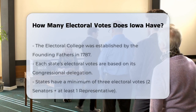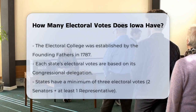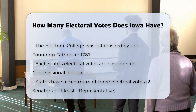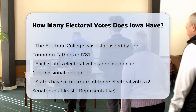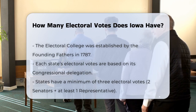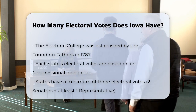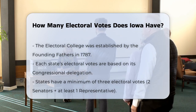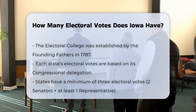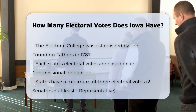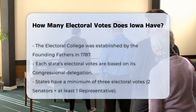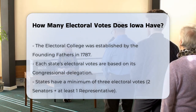To understand how many electoral votes Iowa has, we need to dive into the system of the Electoral College in the United States. The Electoral College is a process established by the Founding Fathers at the Constitutional Convention in 1787, where each state is allocated a certain number of electoral votes based on its population.